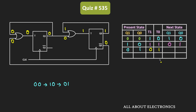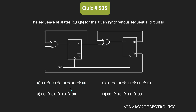With inputs T1=0 and T0=1, since T1 is 0 the output of the first flip-flop will remain in the same state, so Q1 will remain 0. Since T0 is 1, the output of the second flip-flop will toggle — earlier it was 1, so now it will become 0. The circuit goes from the 01 state to the 00 state, and from then onwards the same sequence will repeat. With every clock pulse, this is the sequence of outputs: 00→10→01→00. So option A is the correct one.